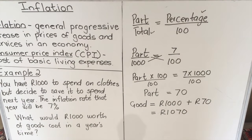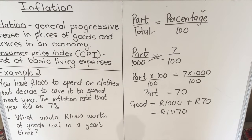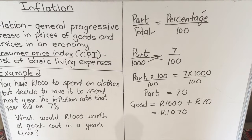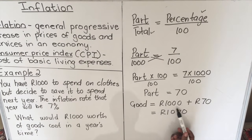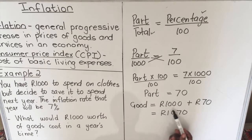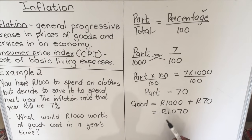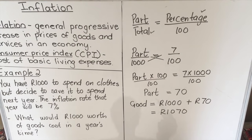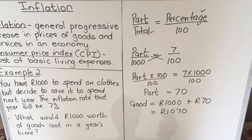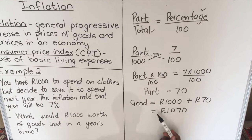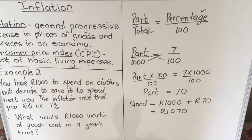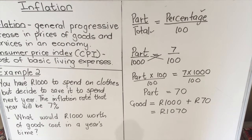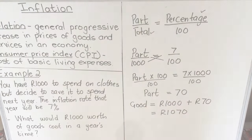So the following year the goods will cost 1070 rands. This is what inflation does — it makes prices go up. If you could buy something for 1000 rands this year and inflation goes up by 7 percent, the following year it will cost you 1070 rands. This is the end of our lesson, thank you.